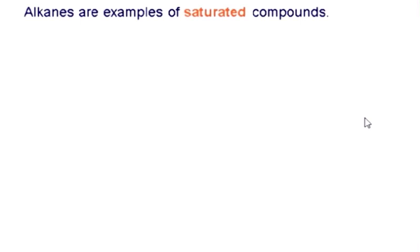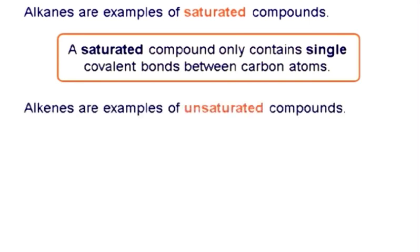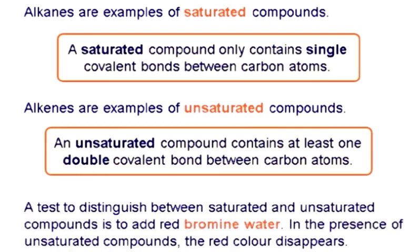Alkanes are examples of saturated compounds, which only contain single covalent bonds between carbon atoms. Alkenes are examples of unsaturated compounds, which contain at least one double covalent bond between carbon atoms. I'm sure you remember the bromine water test.